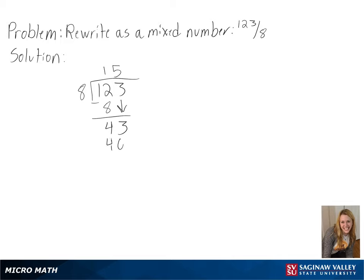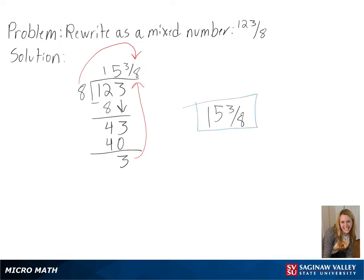Then moving down the 4, we know 8 goes into 43 five times to get 40, with 3 left over. Since our denominator always stays the same, we get 3 eighths as our remainder and 15 and 3 eighths as our final answer.